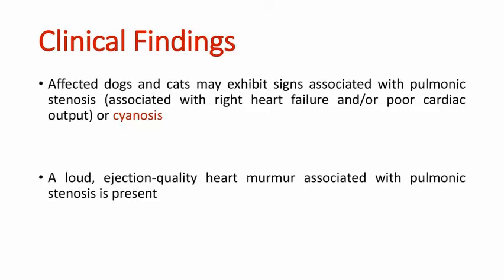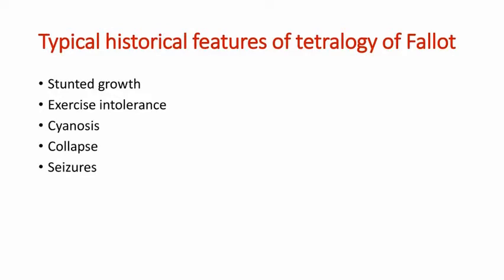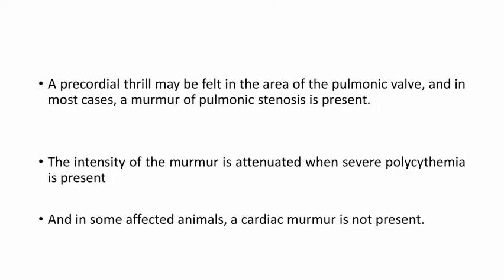Coming to the clinical findings: affected dogs and cats may exhibit signs associated with pulmonic stenosis and cyanosis, and a loud ejection-quality heart murmur associated with pulmonic stenosis is present. Typical historical features of Tetralogy of Fallot include stunted growth, exercise intolerance, cyanosis, collapse, and seizures. A precordial thrill may be felt in the area of the pulmonic valve, and in most cases a murmur of pulmonic stenosis is present. The intensity of the murmur is attenuated when severe polycythemia is present, and in some affected animals the cardiac murmur is absent.